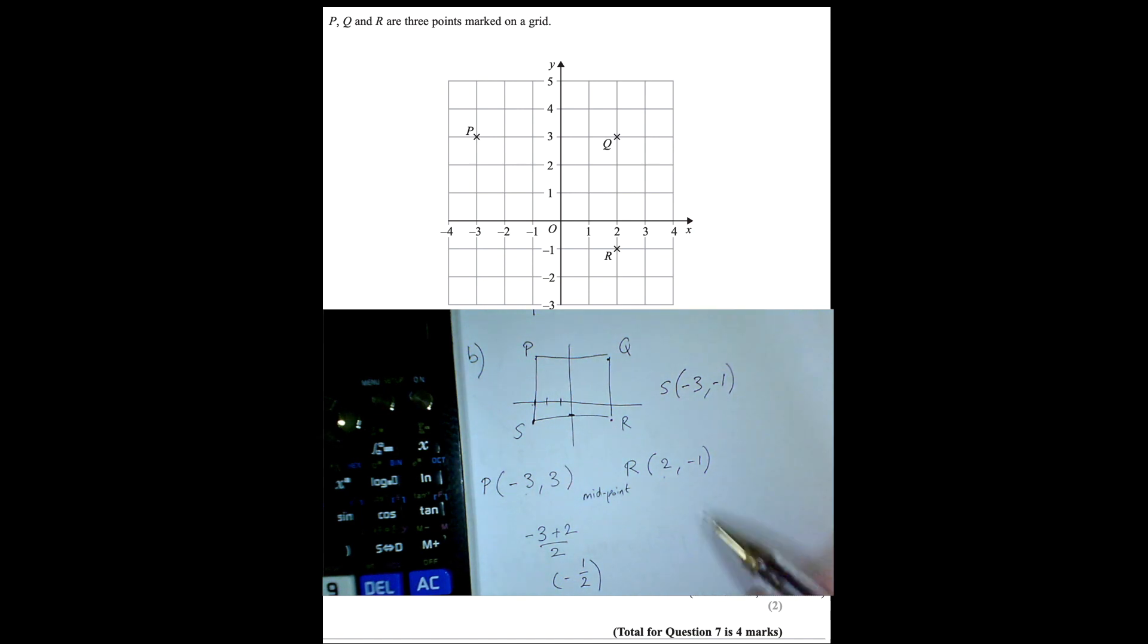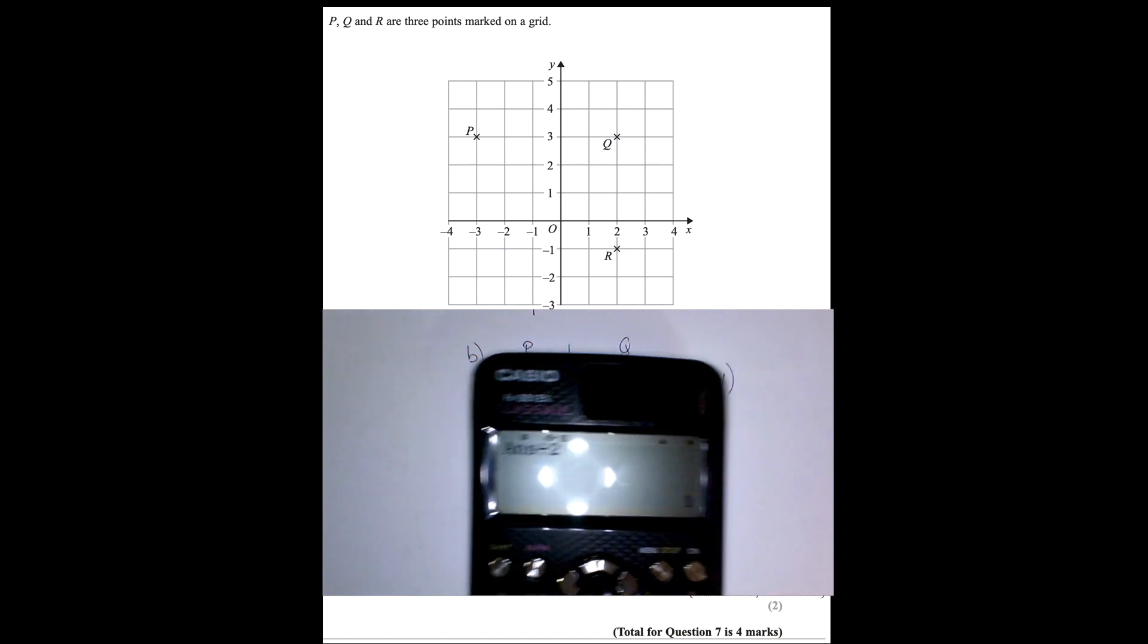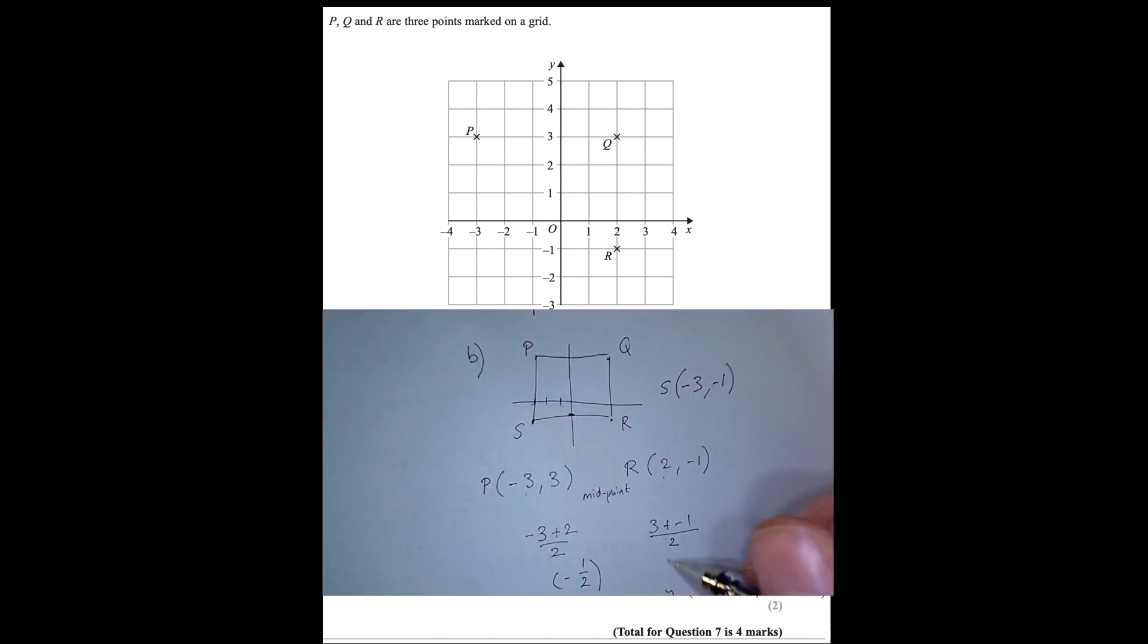And I've got the same trick for the y coordinate. So I'm going to find the average of 3 and -1 divided by 2. So I'm going to type into my calculator, 3 and -1. I'm going to press equals, and divide that by 2, and that gives me the average. And that's going to be the y coordinate is 1. OK. So x is minus a half, y is 1. So the midpoint coordinate is going to be (-1/2, 1). And that's your answer. OK.